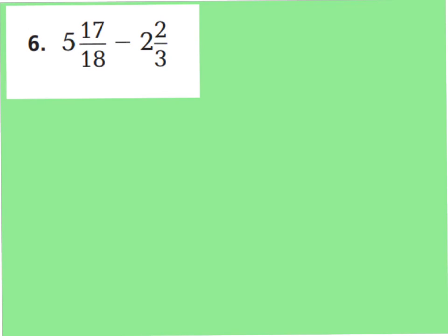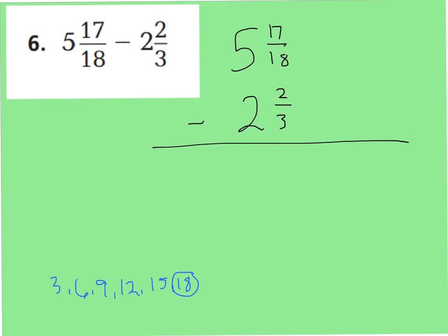Alright, let's take a look at question 6. Question 6 says 5 and 17 18ths minus 2 and 2 3rds. Now looking at my denominators, they're not the same. So I need to find a common denominator. My denominators are 18 and 3. I'm going to think about my multiples of 3. 3, 6, 9, 12, 15, 18. I'm going to stop there because I know the top fraction already has a denominator of 18. So I can just change my 3 to an 18 and make an equivalent fraction.